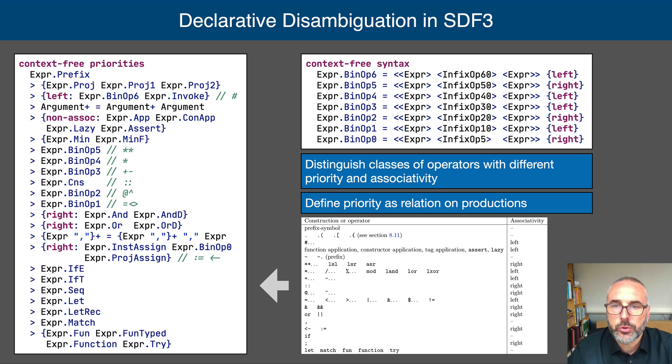There is much more to say about disambiguation. For example, these rules solve the dangling else ambiguity, and the deep priority conflicts caused by low priority constructs such as let and fun. A longest match predicate resolves the ambiguity caused by nested pattern match clauses. But a more in-depth discussion will have to be for another time.